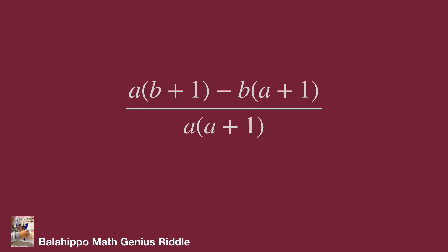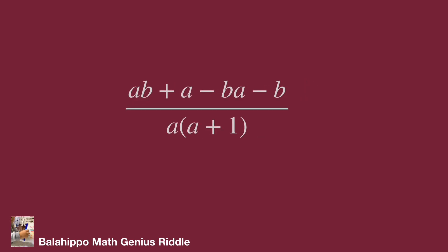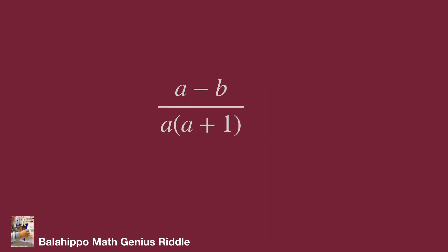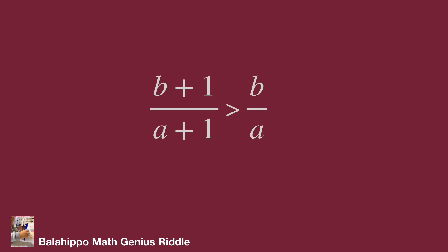The numerator expands as ab plus a minus ab minus b. We have ab and minus ab in the numerator, which cancel out. After that, the fraction simplifies to a minus b over a times (a plus one). Given the condition a is greater than b is greater than zero, we know a minus b is larger than zero, and a times (a plus one) is also larger than zero. Therefore we prove a minus b over a times (a plus one) is greater than zero. So b plus one over a plus one is greater than b over a, meaning b over a is less than b plus one over a plus one.